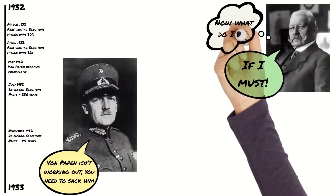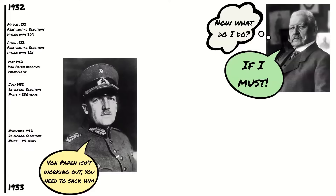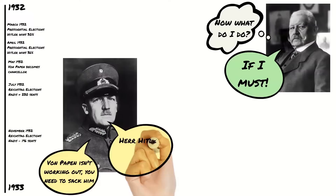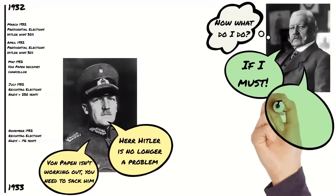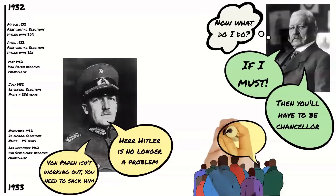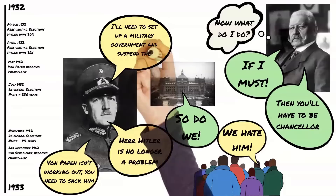Hindenburg was now stuck. He didn't want to appoint Hitler as Chancellor but didn't know what else to do. Von Schleicher told Hindenburg that the election results showed support for the Nazis was falling, and he reportedly said 'Herr Hitler is no longer a problem.' So on the 2nd of December 1932, von Hindenburg made von Schleicher Chancellor. This was a disastrous decision. Von Schleicher had no public support and no support in the Reichstag, and asked the President to suspend the constitution and place a military government in its place with von Schleicher at its head.